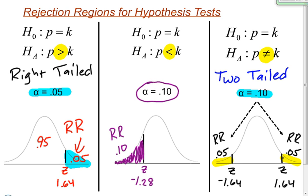The purpose of this video is to help you create the rejection region, draw a picture of it, and find the z-score that cuts off that rejection region. In some of my other videos I explain how you can use the rejection region to determine what you're going to do with your hypothesis test. I hope this has helped — thank you for watching and have fun in your stats class.